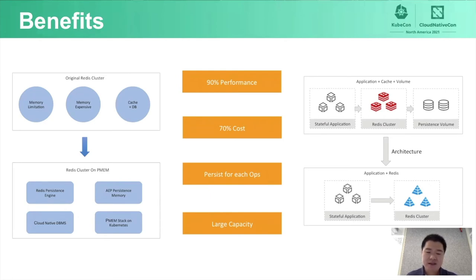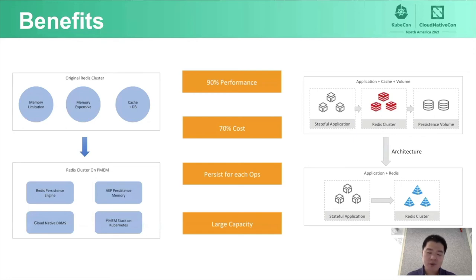In the new system, persistent memory can provide large Redis instances, which is important for large database service scenarios. We evaluated our Redis instances online and obtained the following statistics: in terms of performance compared to DRAM, persistent memory achieves 90% performance; in terms of cost compared to DRAM, persistent memory achieves 70% of the cost. So persistent memory provides a good performance-to-cost benefit. In the old system, the architecture had three layers: application, Redis cache, and persistent volume. In the new system, the architecture has only two layers — applications and the Redis cluster — with no need for a persistent volume, since the Redis cluster itself handles both caching and data persistence.